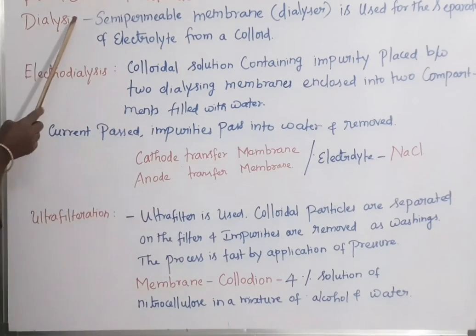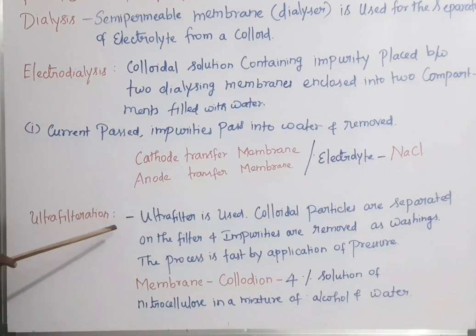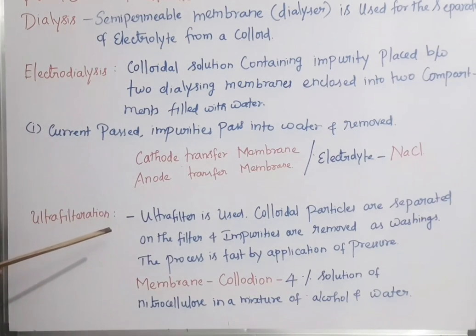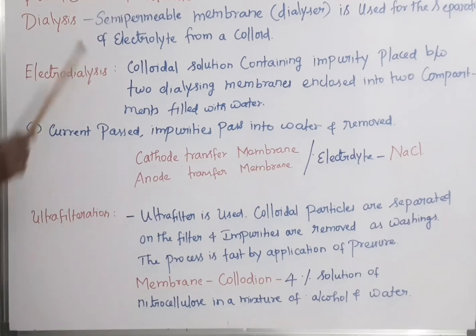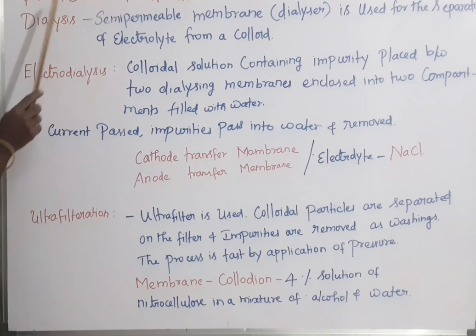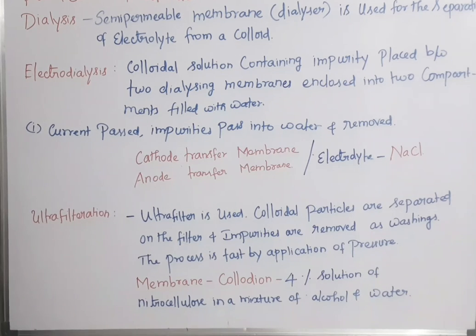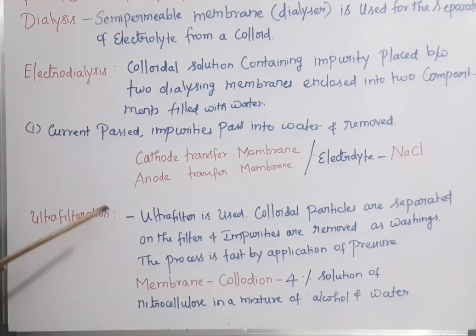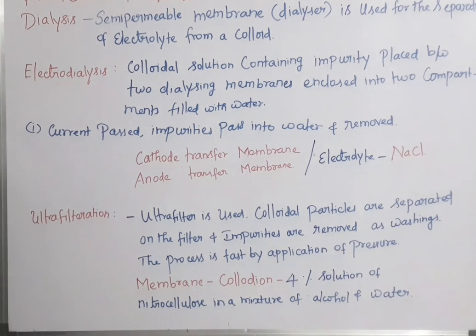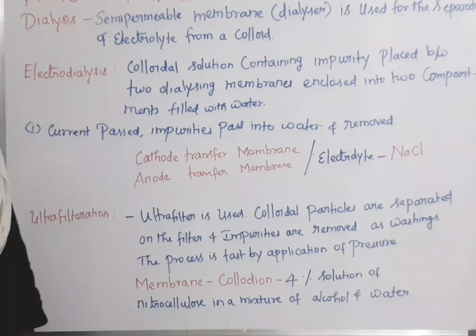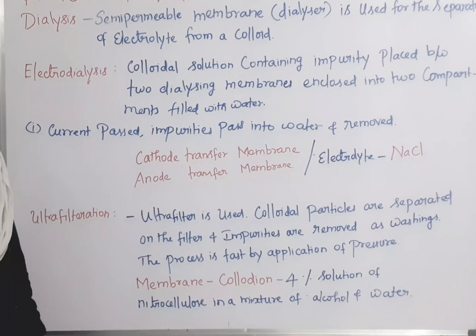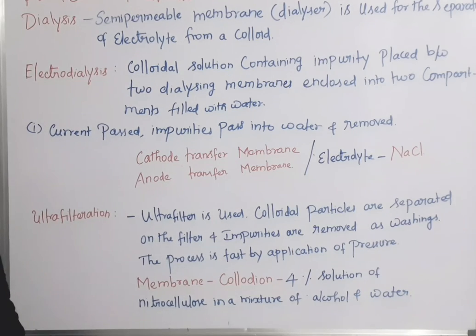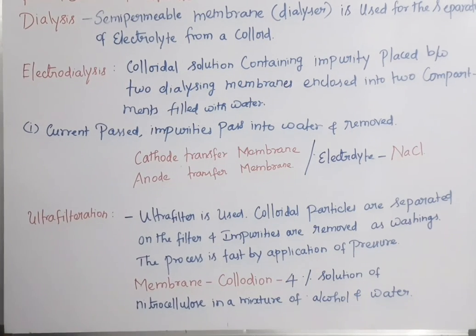So these are the three techniques — dialysis, electrodialysis, and ultrafiltration — used for the purification of colloids. The electrolyte impurities present in the colloidal solution are removed by using these three techniques. If you liked this video, please share, comment, and like it. Subscribe to our YouTube channel Chemistry Lab and press the bell icon. Thank you.